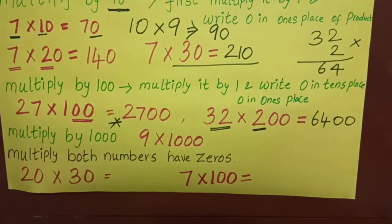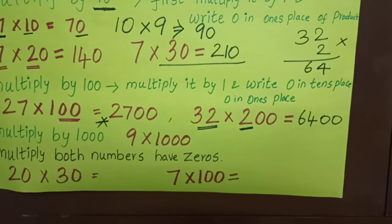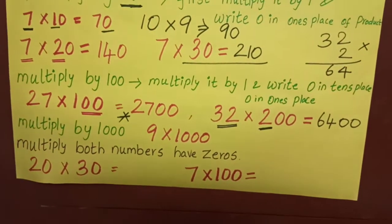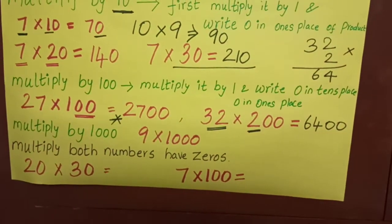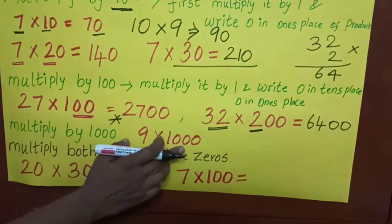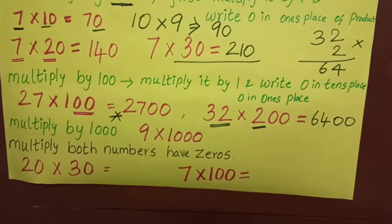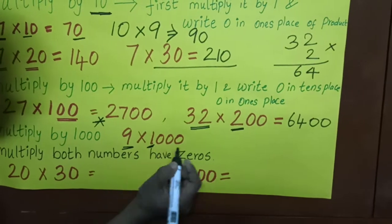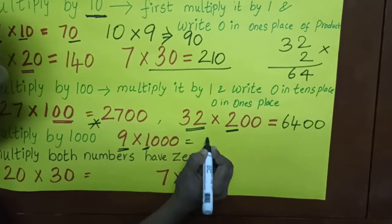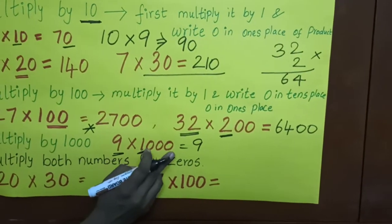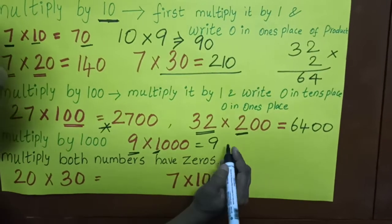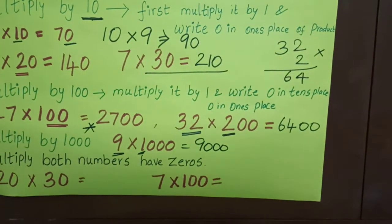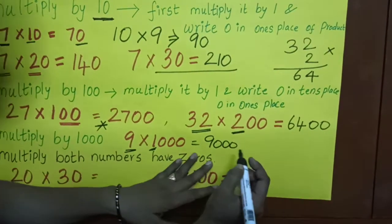Now, multiply by 1000. For example, 9 into 1000. What is the procedure? 9 into 1 — 9 ones are 9. Then how many zeros? 1, 2, 3 — three zeros. That's all.